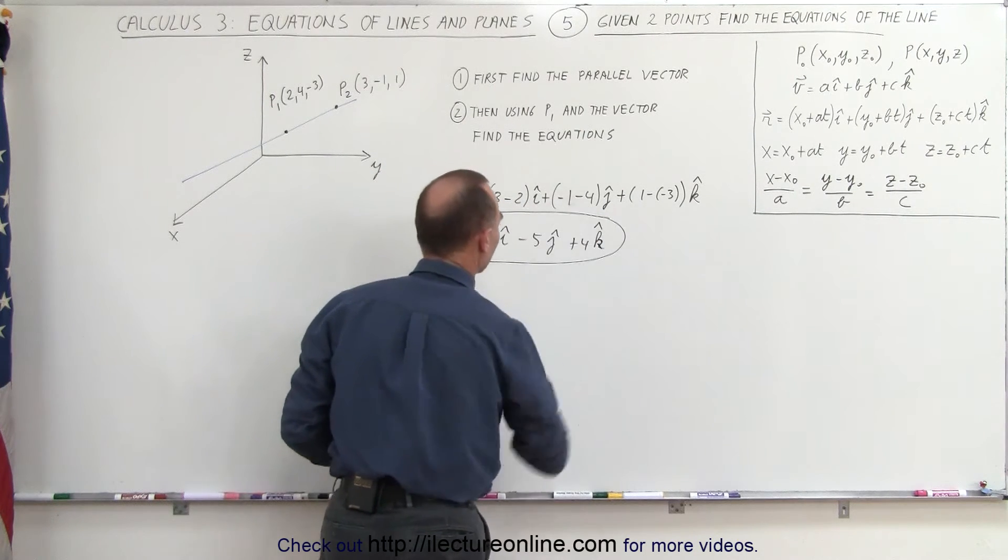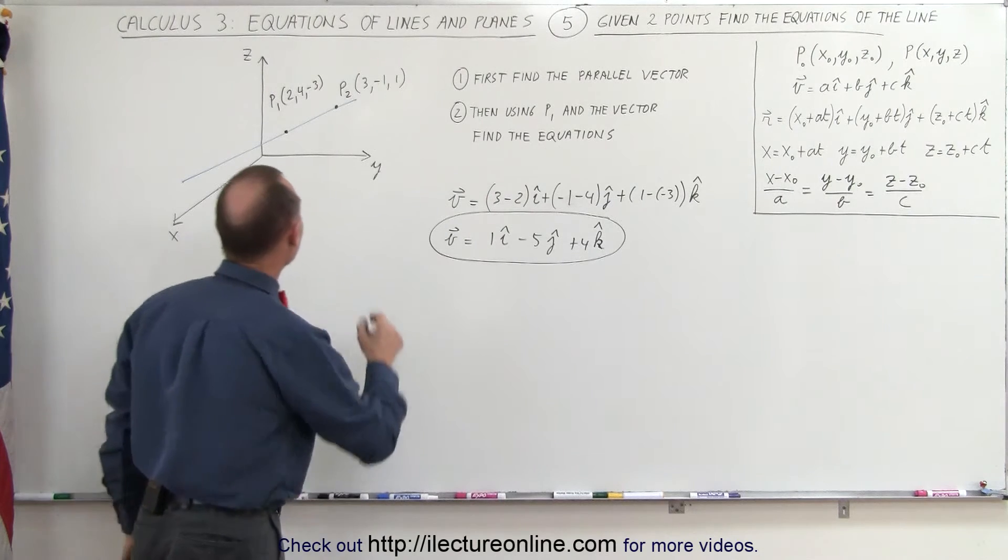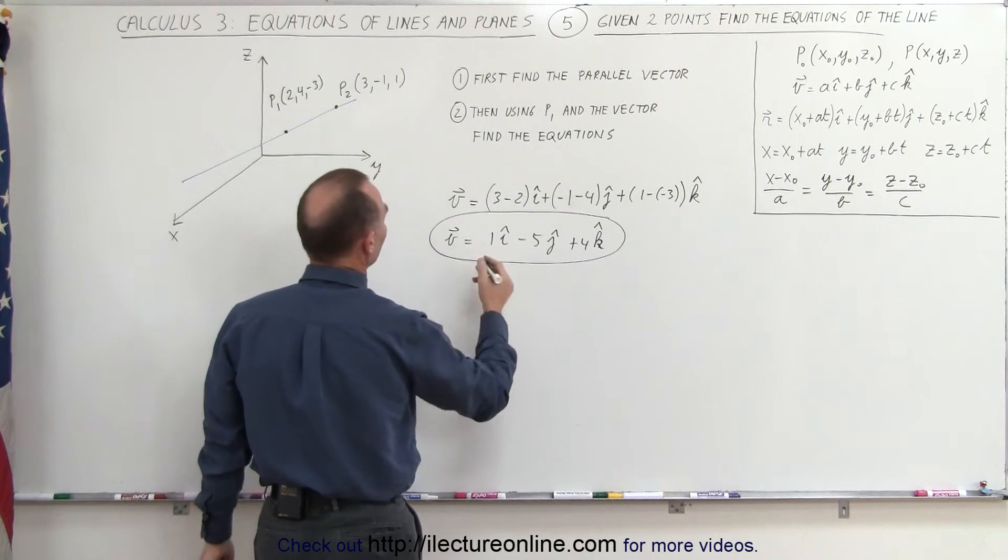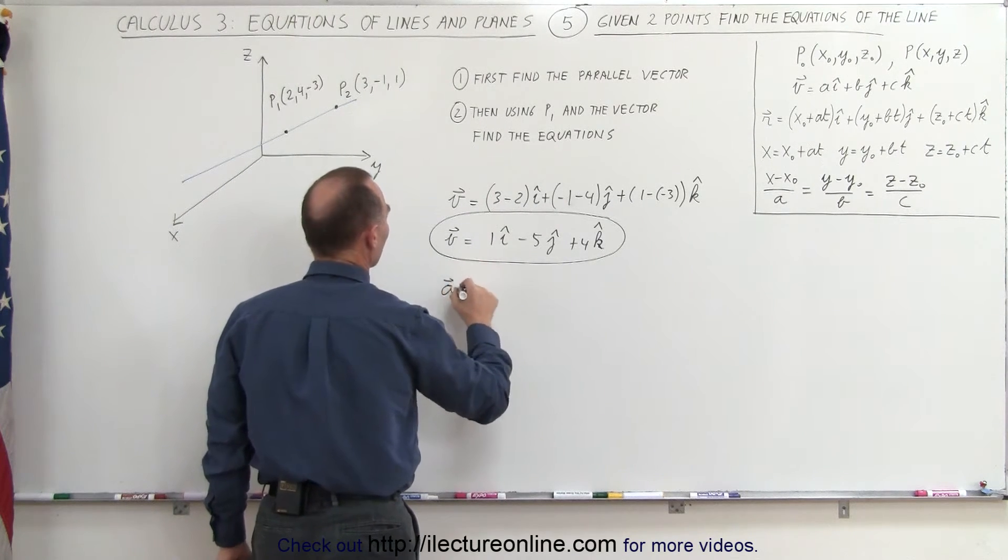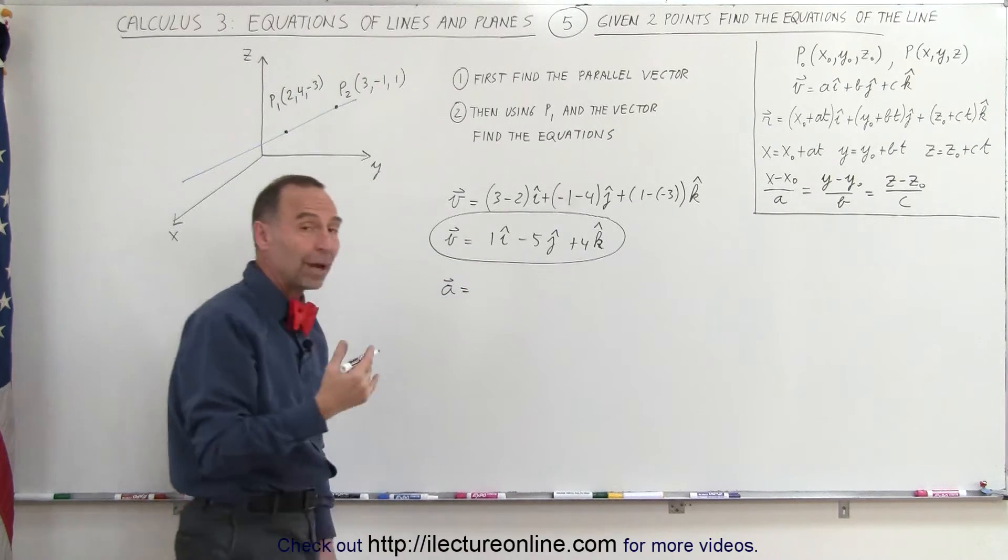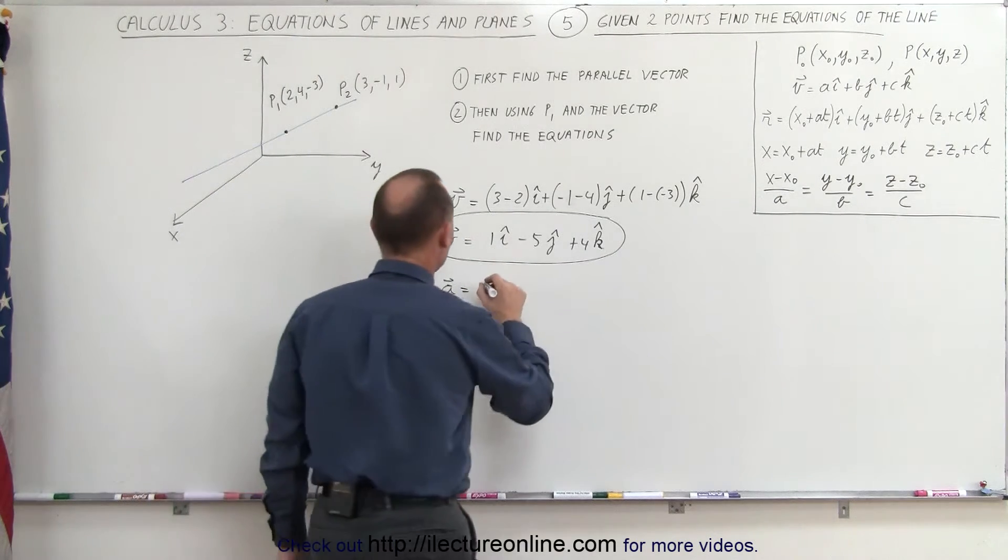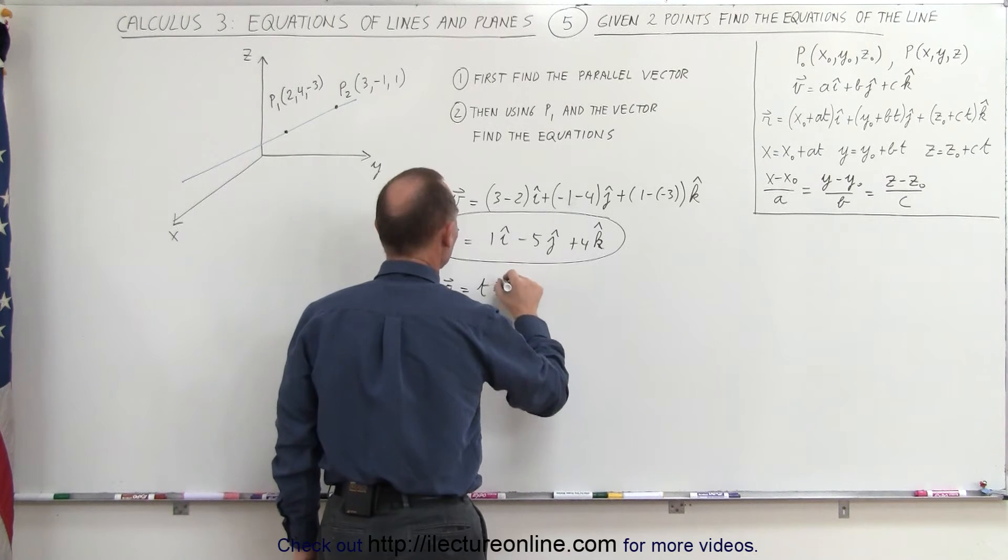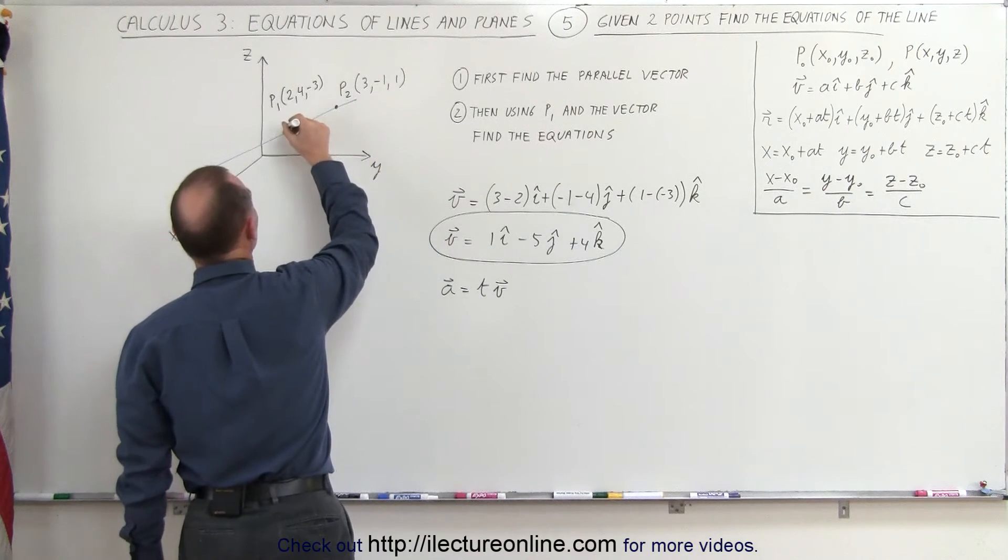Now that we have our parallel vector, we can now create the a vector, which in essence is the v vector, but we're going to add a parameter, the parameter t to that. We can say that this is equal to t times v, and that would be this vector right here.